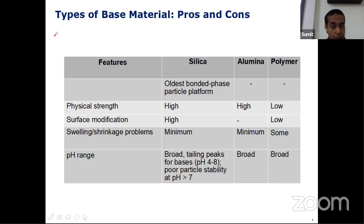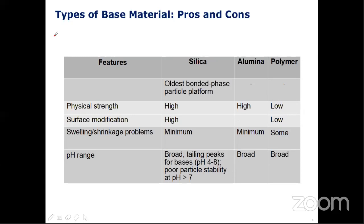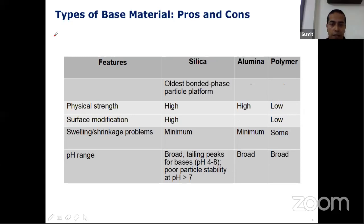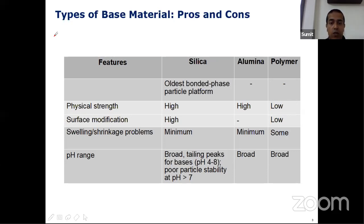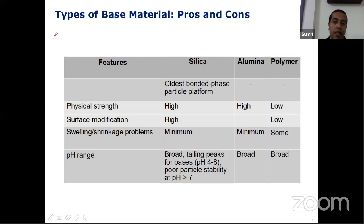But it has got a potential problem. For basic compounds — compounds may be neutral, acidic, or basic — it can give rise to broad tailing peaks, especially in the pH range of 4 to 8. And it has got also poor particle stability problem at a pH which is more than 7. On the other hand, alumina and polymer offer a broad pH range, but they have some disadvantages compared to silica. That is why silica is a preferred material for reverse phase column chemistry.